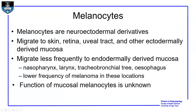Melanoma is derived from melanocytes. Melanocytes are neuro-ectodermal derivatives that migrate to the skin, retina, uveal tract, and other ectodermally derived mucosa. They migrate less frequently to endodermally derived mucosa, like the nasopharynx, larynx, tracheobronchial tree, and esophagus. Because of their less frequent migration to such mucosa, you get a lower frequency of melanoma in these locations. However, the function of mucosal melanocytes is still unknown.